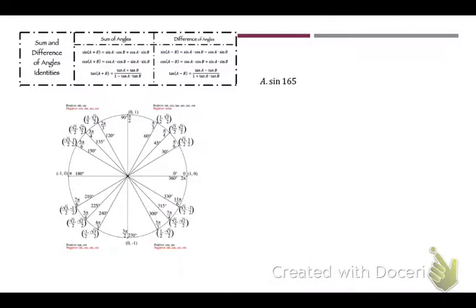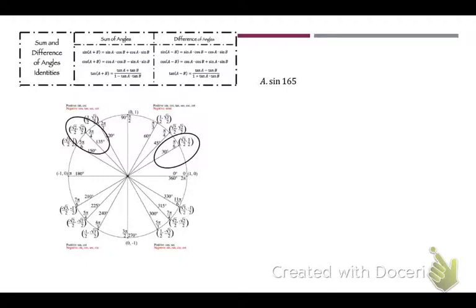Let's start with Example A. We have sine of 165 degrees. Well, 165 is 30 plus 135 — or there are different ones; you could have done 120 plus 45. You will still get the same answer, but you just have to find something that will add up to 165. So in this case we're just going to use 30 and 135, and rewrite that as sine of 30 plus 135.